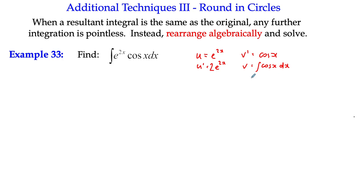So we've got 2 e to the 2x, and v is the integral of cos x with respect to x, and cos x integrates to sin x plus c. Okay, I don't think we'll need the plus c just now, because we're going to go a wee bit further, but we'll keep that in the bag.